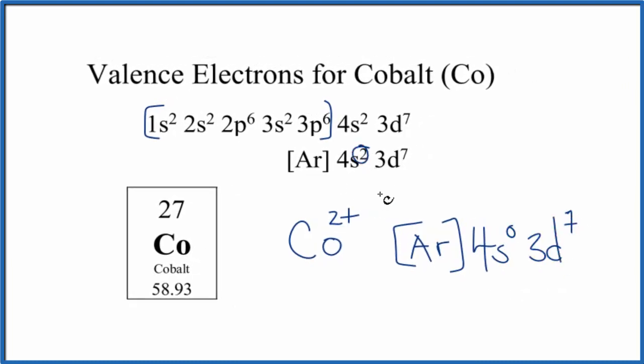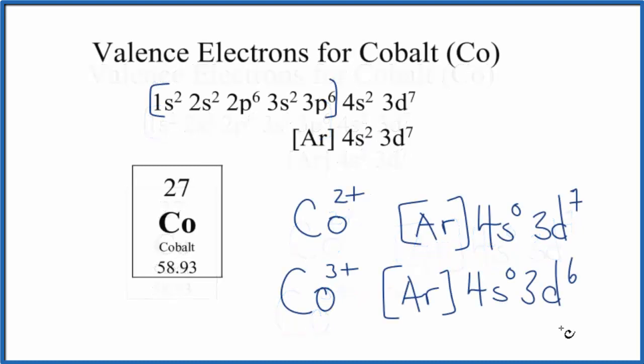So it lost these two electrons in the 4s, so we have 4s0. For cobalt 3 plus, the other common ion it forms, that looks like this. Here it lost 2 from the 4s and 1 from the 3d7, so we have 4s0, 3d6. So these are two common ways that cobalt forms ions when it bonds with other elements.